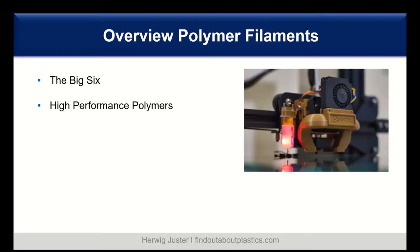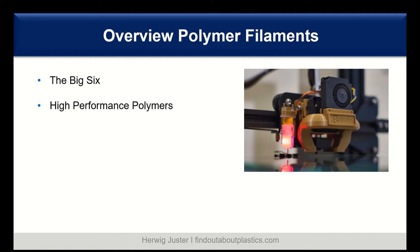Let me give you a brief overview. These are the Big 6 filament materials, and I will also mention some high-performance polymers suitable for filament printing. The first of the Big 6 is polylactic acid, PLA. It is a go-to printing material with a lower printing temperature.